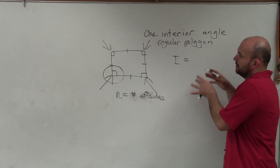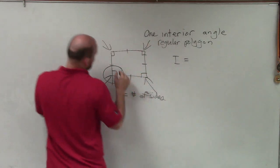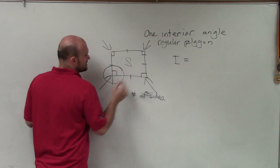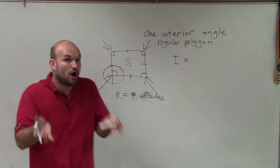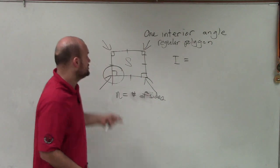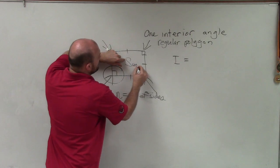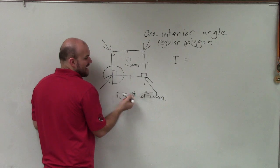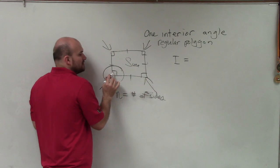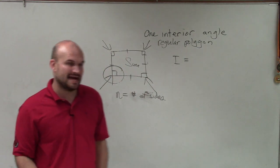Now, if you think about this, if I could figure out what the sum is of all of these angles and then divide it equally between these angles, because remember, all the angles are exactly the same. So if I can figure out what the sum is of all of these angles and then divide it by how many angles I have or how many sides I have, that will give me the measure of just one interior angle.